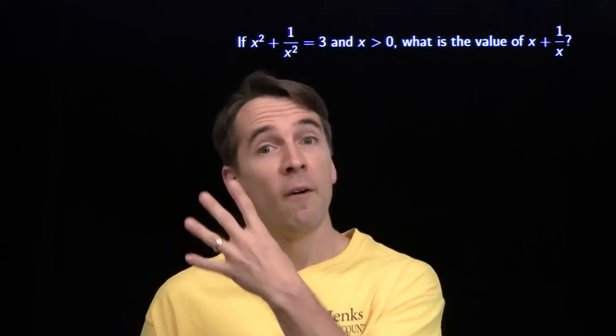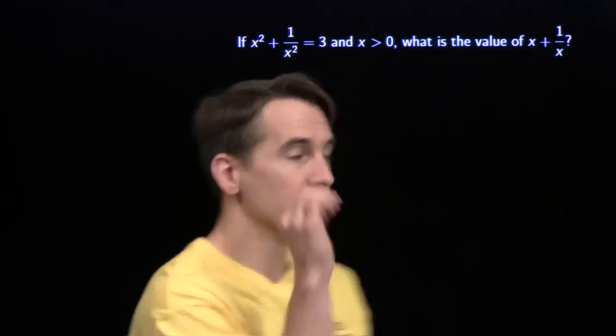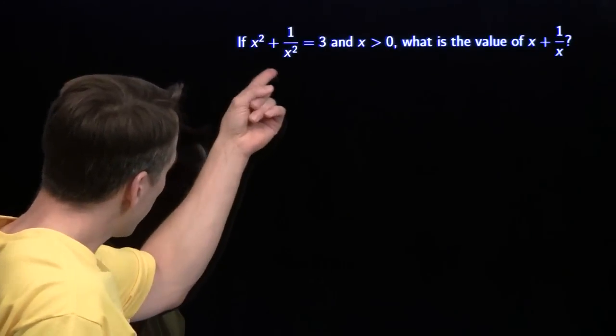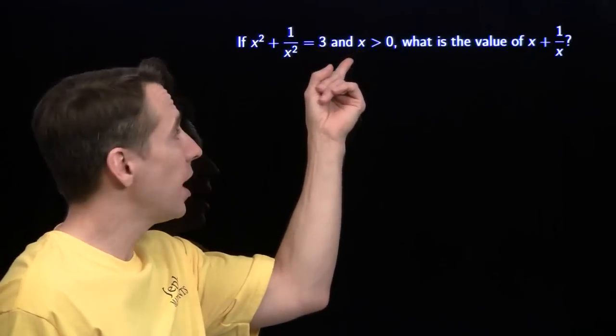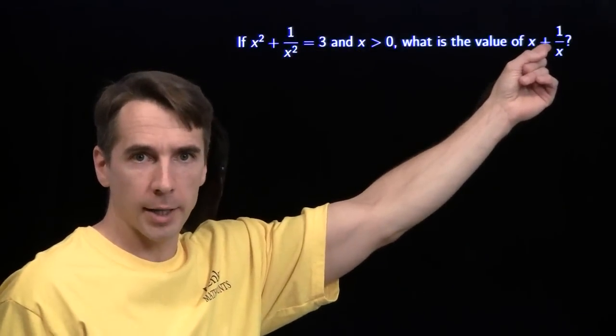This month we have two algebra problems, four problem-solving strategies. We're going to start right here. x squared plus 1 over x squared is 3, x is positive, but we want x plus 1 over x.